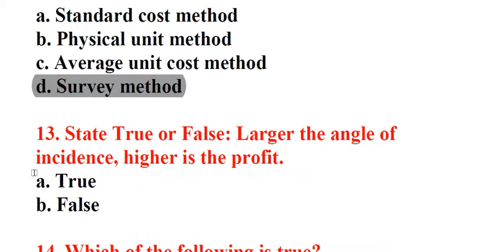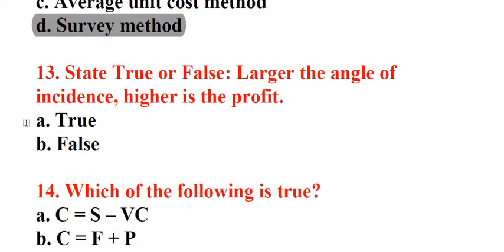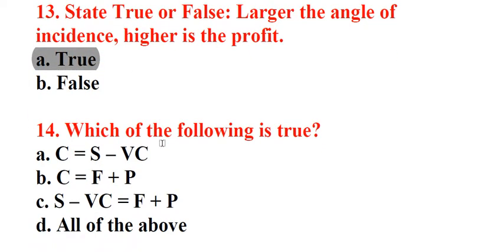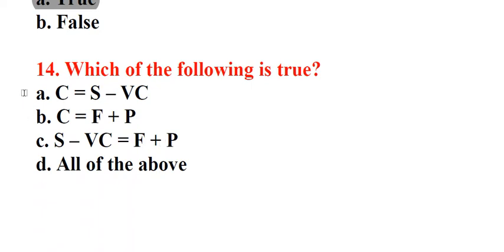Question 13: State true or false. Larger the angle of incidence, higher is the profit. A. True, B. False. Answer: A. True. Question 14: Which of the following is true? A. C equals S minus VC, B. C equals F plus P, C. S minus VC equals F plus P, D. All of the above. Answer: D. All of the above.